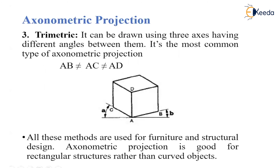In the trimetric projection, it can be drawn using three axes having different angles between them. Here all three sides will have different angles: AB is not equal to AD, which is not equal to AC. All these methods are used for furniture design — if we want to produce furniture, we can use this design.